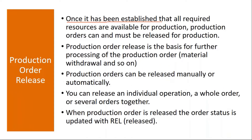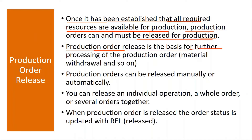Once it has been established that all required resources are available for production, the production orders can and must be released. So normally, once you ensure everything is available — like your input materials and machines — they release the production order. Production order release is the basis for further processing, and without releasing it, the system does not allow you to carry out subsequent activities in the cycle.